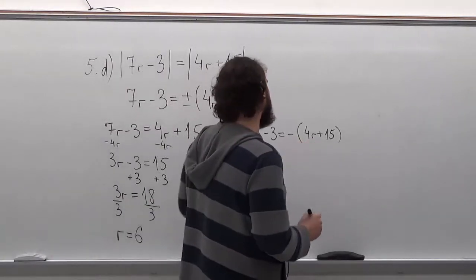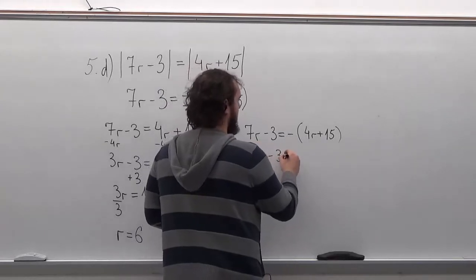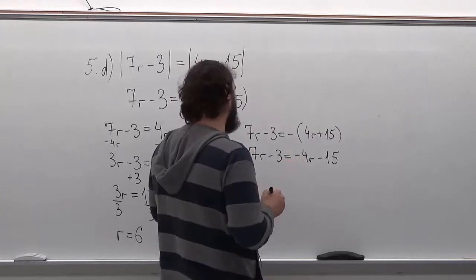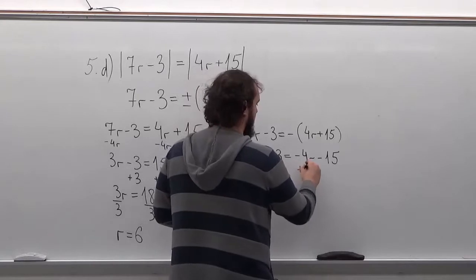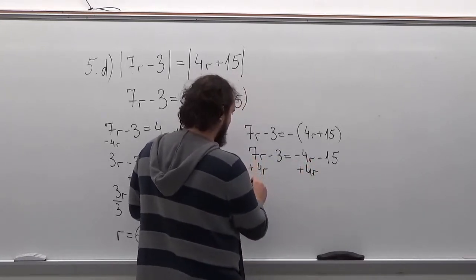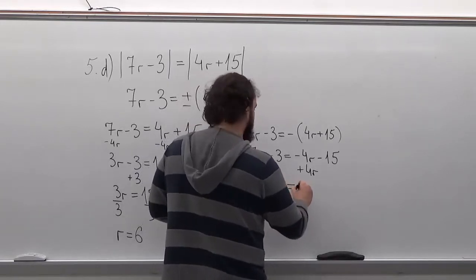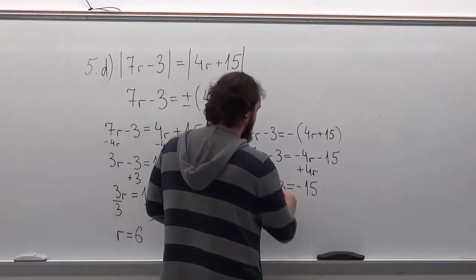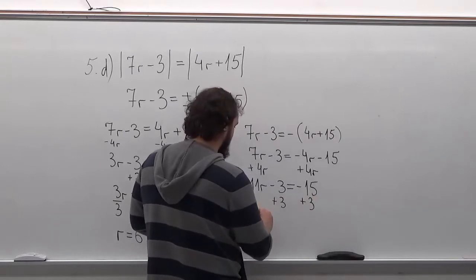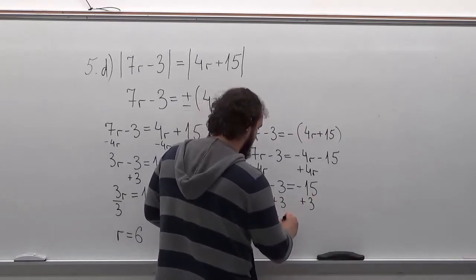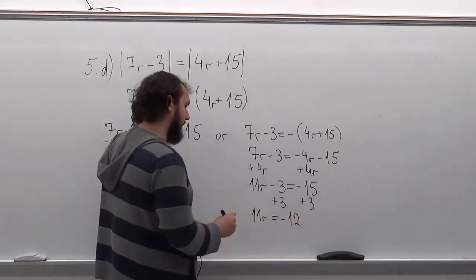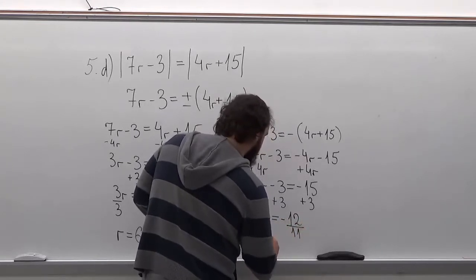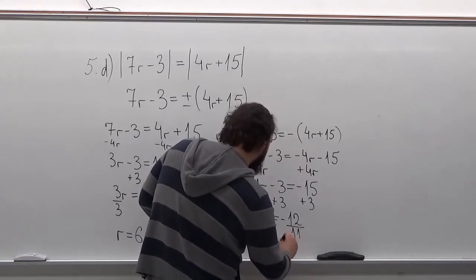For this side, we want to open the parenthesis first. So the first thing we'll do is add 4R to each side. We'll have 11R equals minus 15. Now we'll add 3 to each side. And now we'll divide both sides by 11. So our answer will be minus 12 over 11.